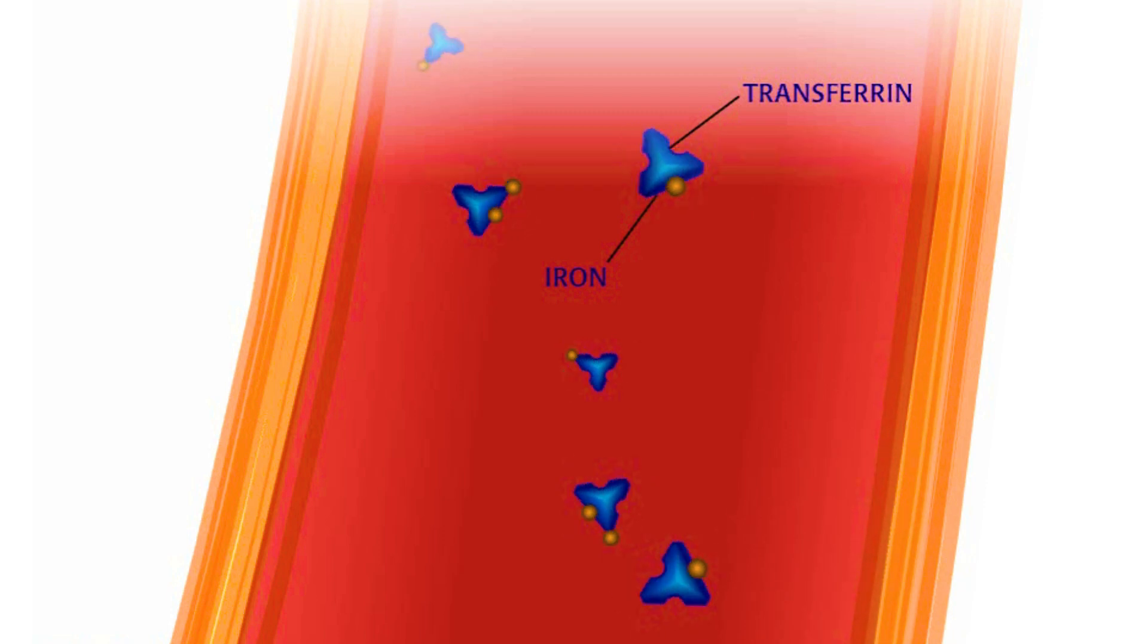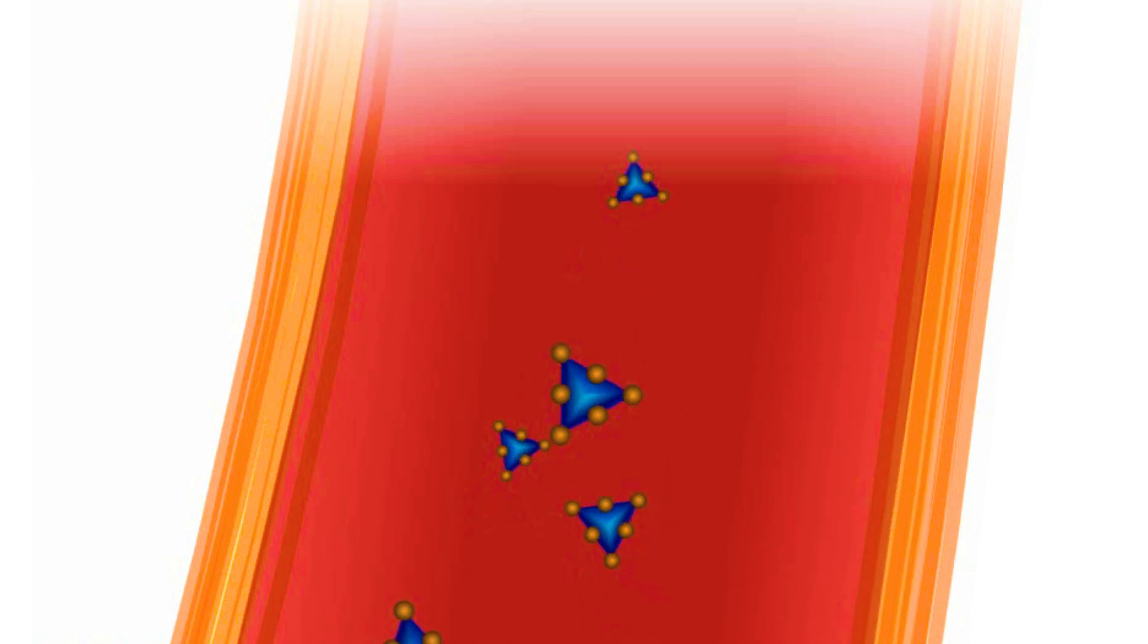In a person with hemochromatosis, because so much iron is present, the transferrins become saturated, leaving 0% of the iron binding spots free.